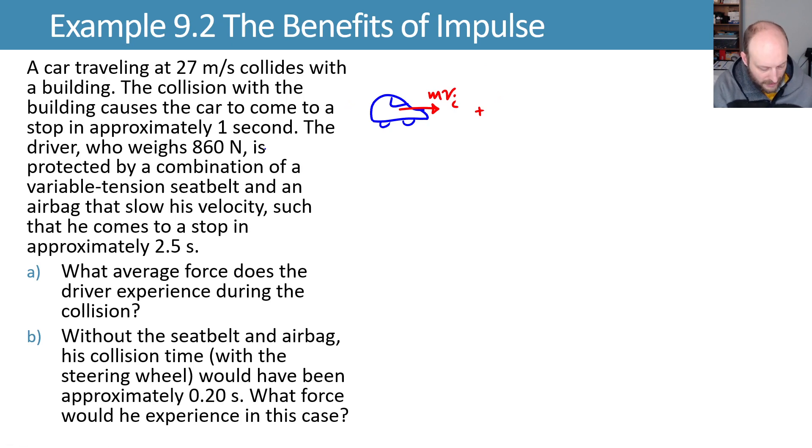The driver who weighs 860 newtons is protected by a combination of variable tension seatbelt and an airbag that slows velocity such that he comes to a stop in approximately 2.5 seconds.